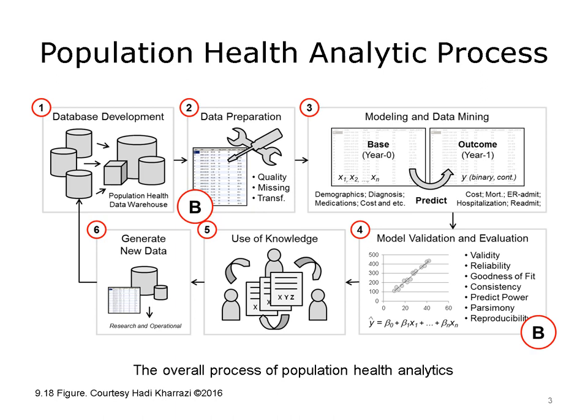The next step contains the development of the modeling and data mining approaches. As depicted in Box 3, this step usually requires a base data set and an outcome data set that would collectively include the dependent and independent variables. As illustrated in Box 4, the next step contains the model's validation and evaluation process. In this phase, analysts use various statistical and data mining concepts to measure how good the model is in differentiating the outcome variable and how reproducible it is when used on other data sets. As pictured in Box 5 and 6, a critical step after an acceptable model is developed is to apply it within the context of a population health management workflow. As marked by Circle B, this lecture discusses the issues with preparing population health data and model evaluation.